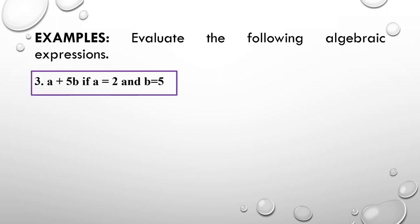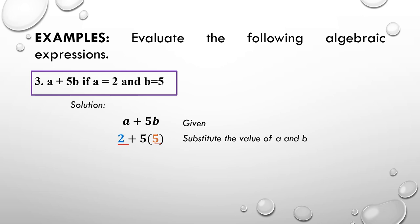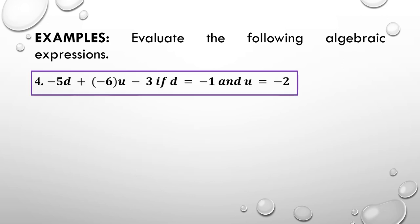For example 3, we have the expression A plus 5B. Let's find its value if A is equal to 2 and B is equal to 5. We copy the expression A plus 5B, then substitute the values of A and B, giving us 2 plus 5 times 5. Applying PEMDAS, multiplication comes first: 5 times 5 equals 25. So we have 2 plus 25, which equals 27. Our final answer for example 3 is 27.